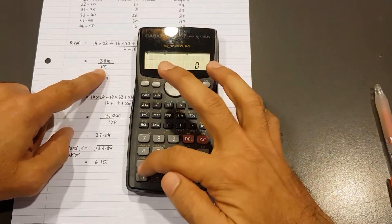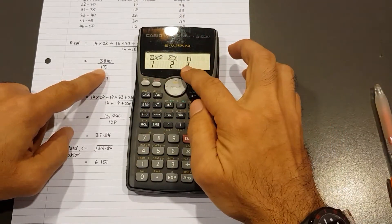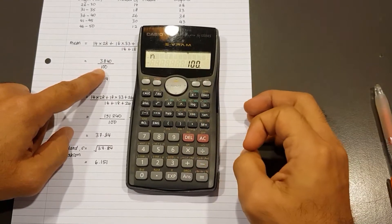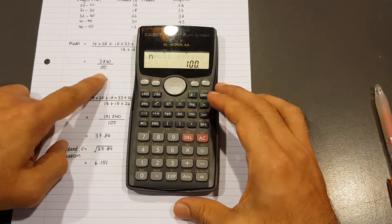we can go ahead and press Shift, 1 again. But this time it's number 3 for N. That's the total frequency. So I press number 3 and I press equal. I get 100. So that's right there.